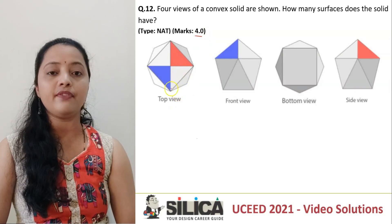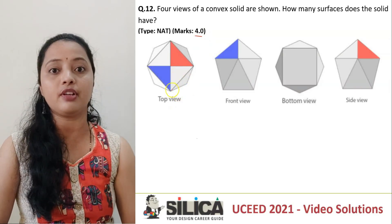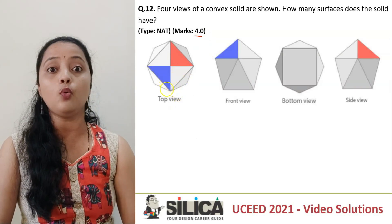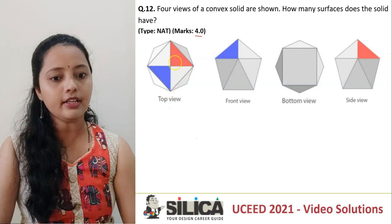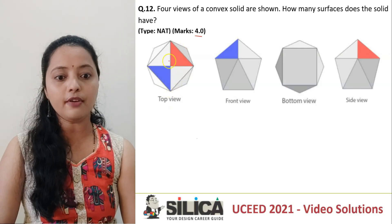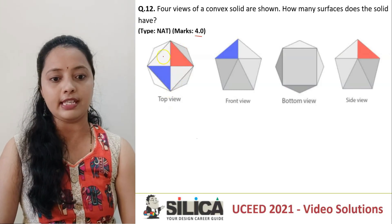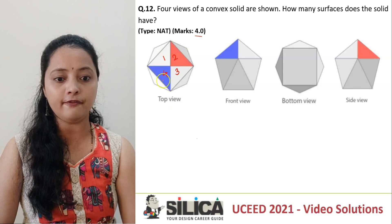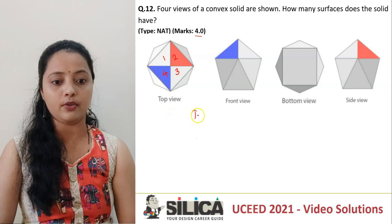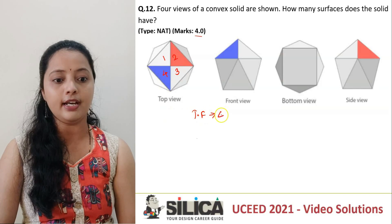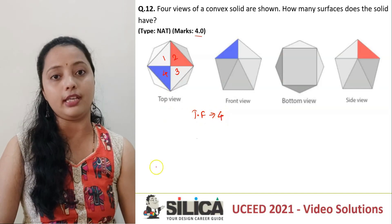Now basically when we count the number of surfaces, we count them in one direction at a time, starting with the top surface. Now from the top view, if we see, I can see these 1, 2, 3 and 4 prominent surfaces. From the top view, how many surfaces do I get? I get 4.